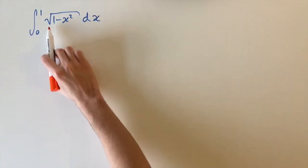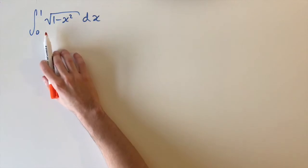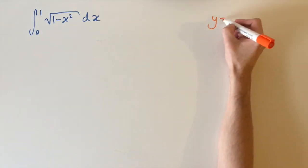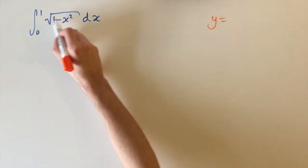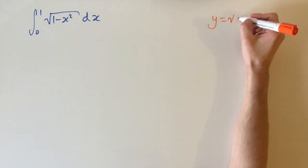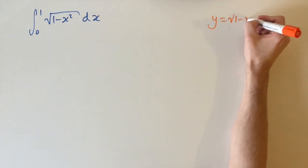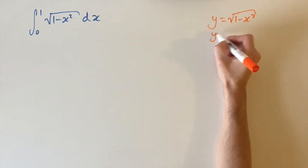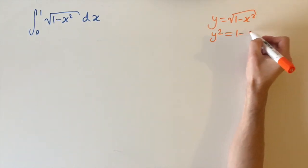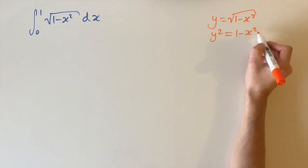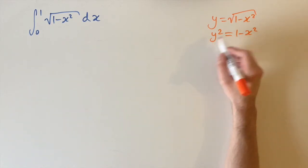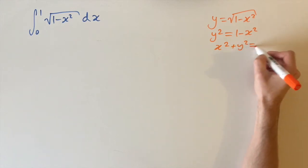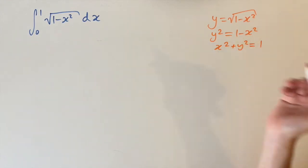The reason is because we are actually integrating under a circle. If we let y equal to the integrand — the square root of 1 minus x squared — then squaring both sides gives y squared equals 1 minus x squared, and bringing x squared to the other side gives x squared plus y squared equals 1. This is the equation of a circle.